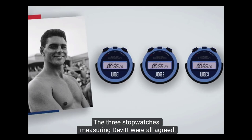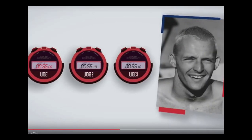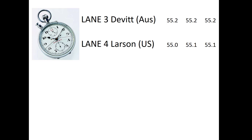The three stopwatches measuring Devitt were agreed, but the three stopwatches recording Larson were slightly different. This is the kind of stopwatch the timekeepers at the 1960 Olympics would have used. Pretty smart looking and here are the times they recorded. On the face of it, Larson clearly won. All his recorded times were lower than any of Devitt's recorded times, but the fact they didn't all agree for Larson raised the problem of what was his actual race time.